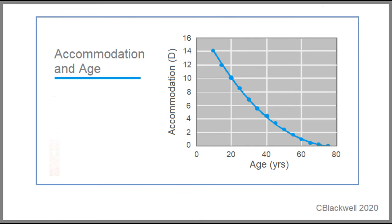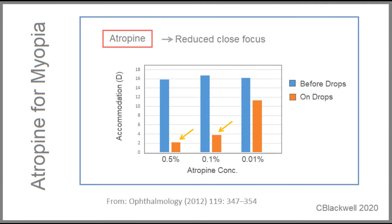To put that in perspective, this is how focusing power decreases over your lifetime. A 10-year-old has roughly 14 diopters of focusing power, which gives a lot of reserve for close focus. Unfortunately, focusing power is in constant decline from there. Sometime around age 40, focusing power drops to around 4 diopters, which is the point where most people start to need help with reading glasses. Keeping that 4 diopter number in mind, either of the two higher strengths of atropine have reduced the child's focusing power to that level, whereas the lesser strength leaves around 11 diopters of focusing power, which is more than adequate for reading and close work.